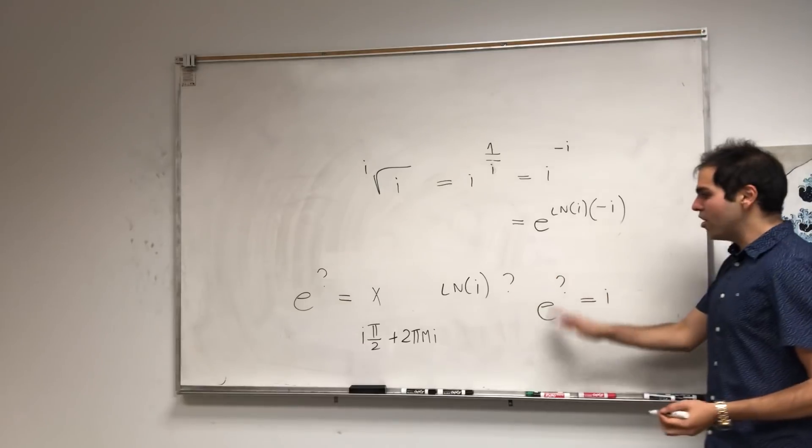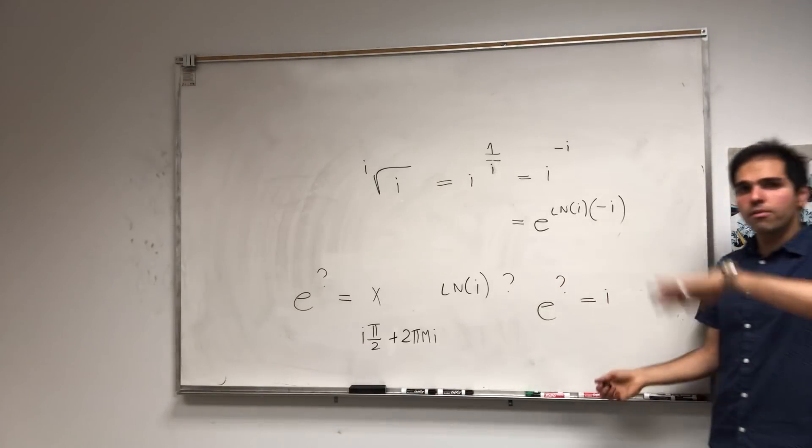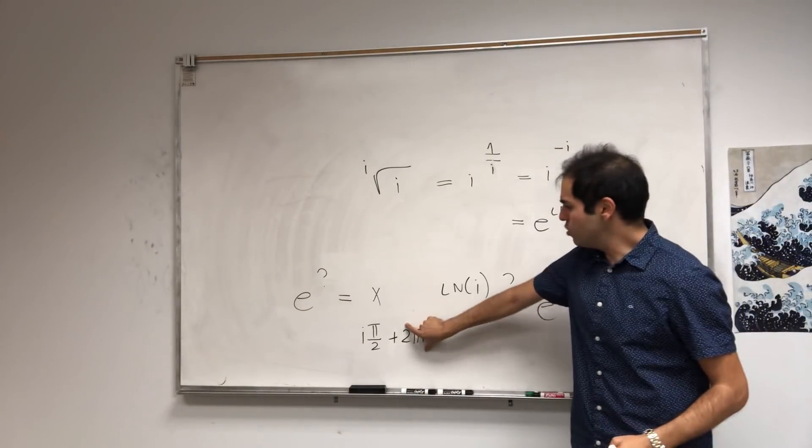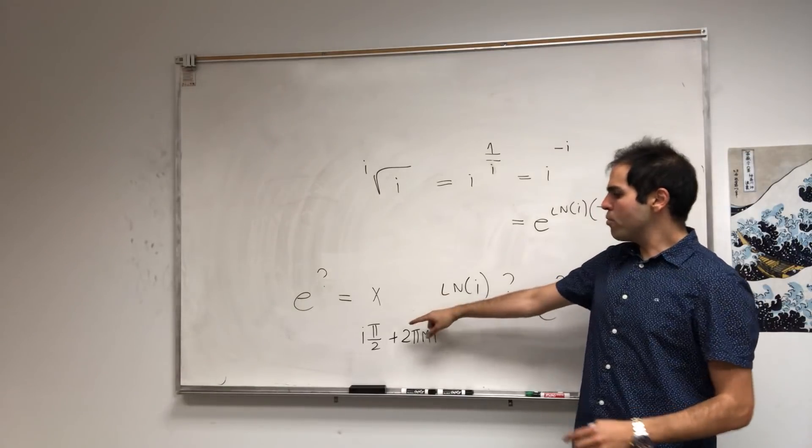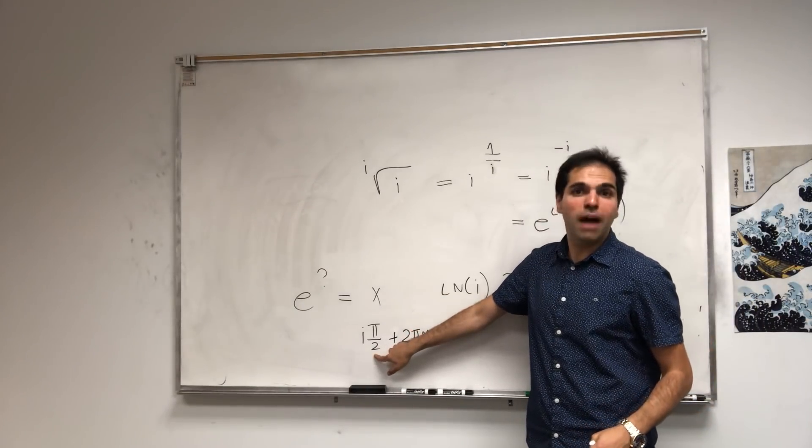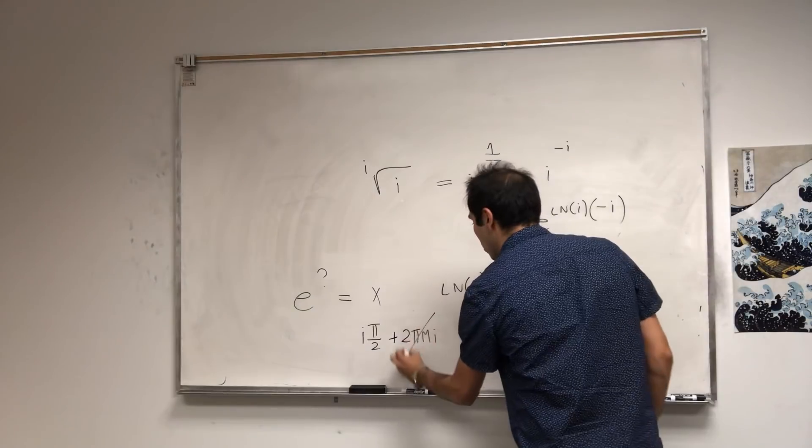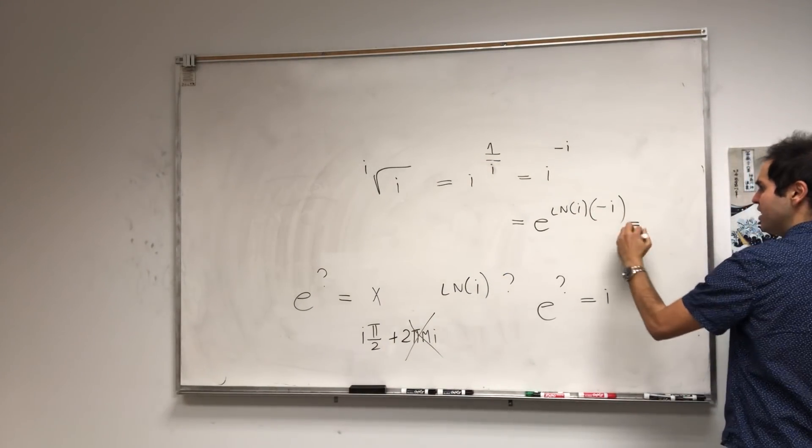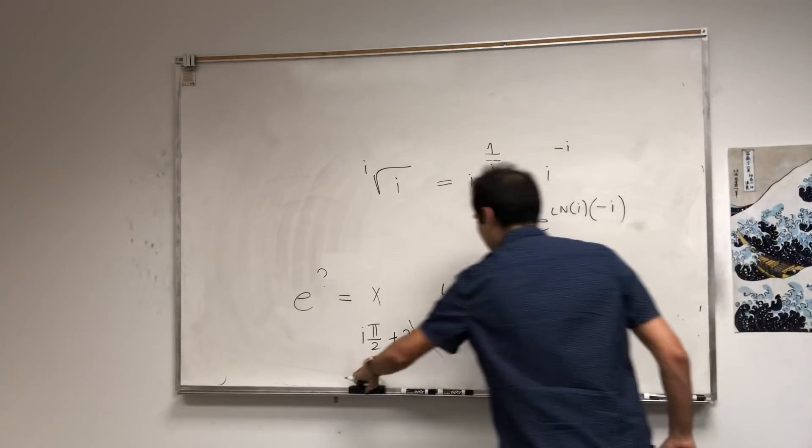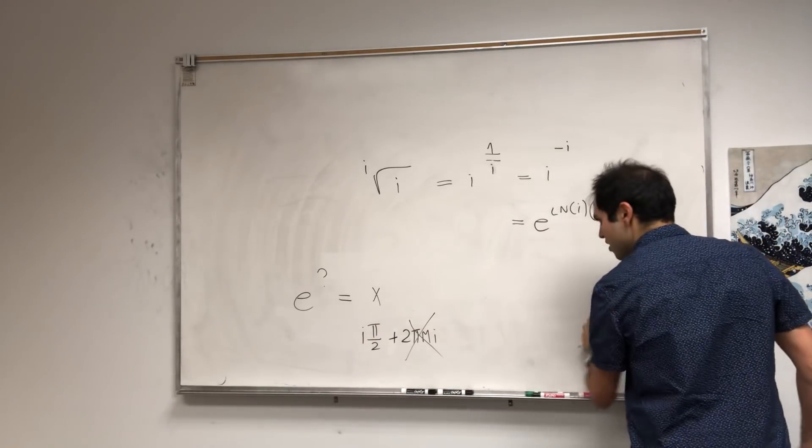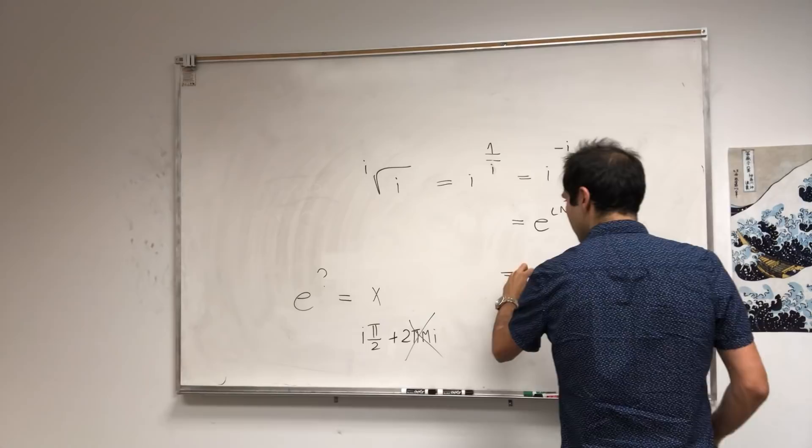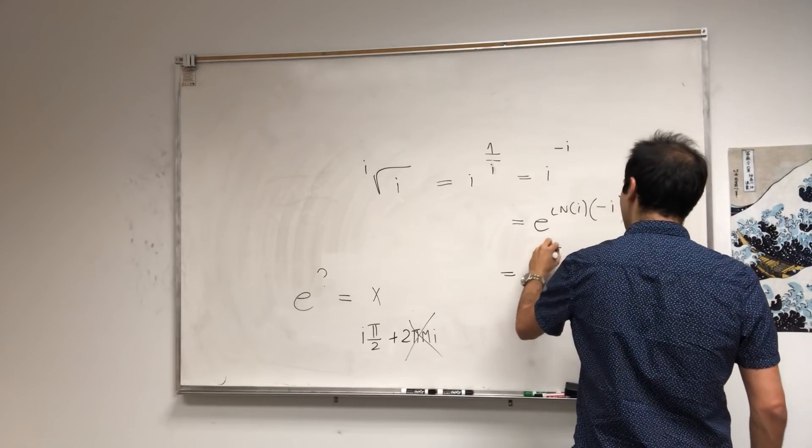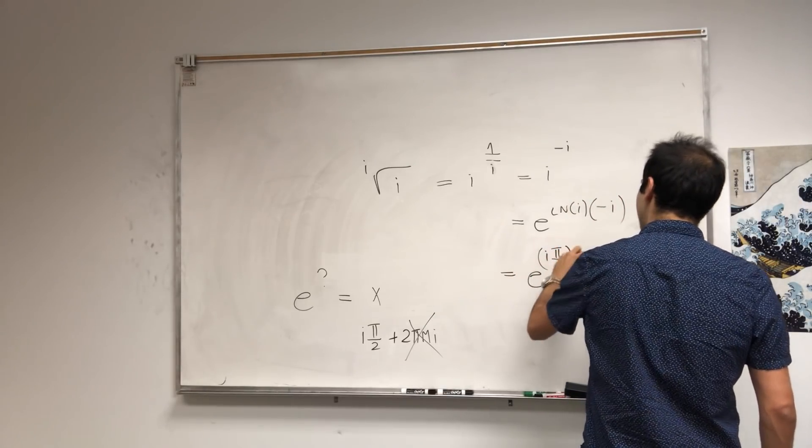But there's something called the principal log, which tells you that you just have to take the number where the argument is between minus pi and pi. So, in other words, we can ignore this and we get e to the i pi over 2 times minus i.